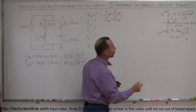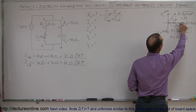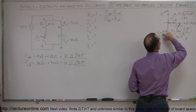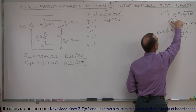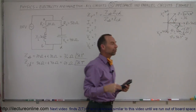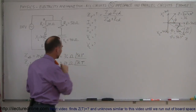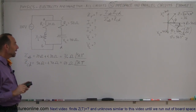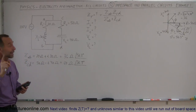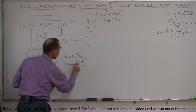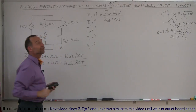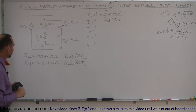The phase angle for the capacitor branch is minus 36.9 degrees because it's lagging in phase, not leading. So the impedance from C to D is 64 ohms at an angle of minus 36.9 degrees.